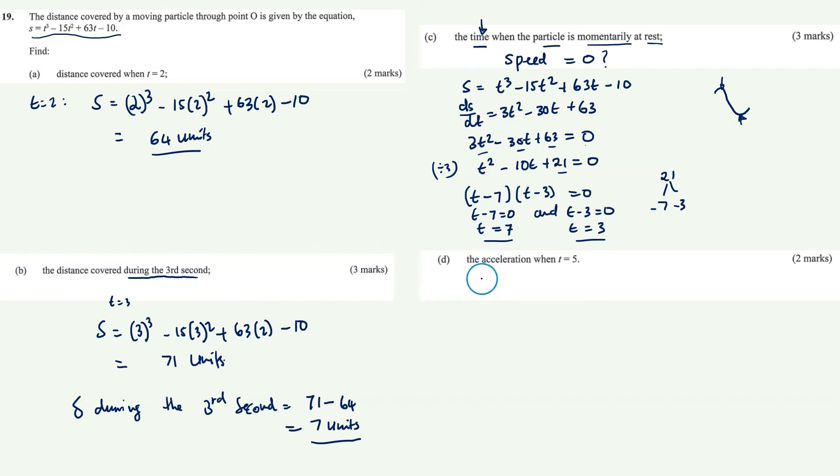For part D, we're asked to find the acceleration when t equals 5. Acceleration is the derivative of speed with respect to time. We have ds/dt equals 3t squared minus 30t plus 63 from before.